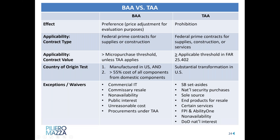Under TAA, the agency has discretion to grant waivers based on non-availability — if there are no offers for domestic end products, then an offer for foreign end products can be accepted. DOD also has a national interest waiver that can be applied. Importantly, BAA applies where TAA does not apply because of an exception — they don't both apply, but if TAA doesn't apply, you can't just assume there are no domestic sourcing restrictions. You need to consider whether BAA would then apply.